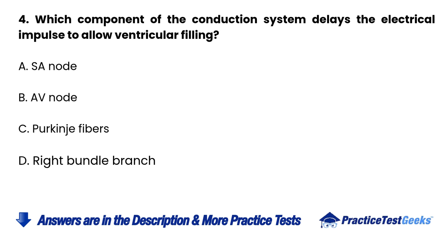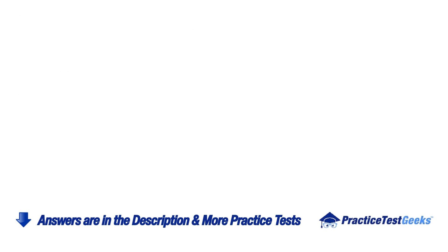4. Which component of the conduction system delays the electrical impulse to allow ventricular filling? A. SA node. B. AV node. C. Purkinje fibers. D. Right bundle branch.